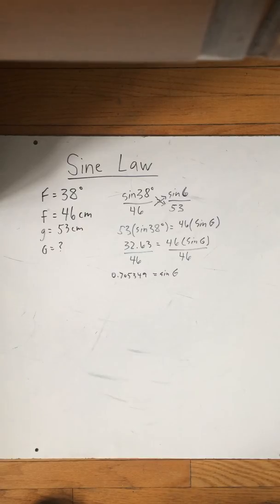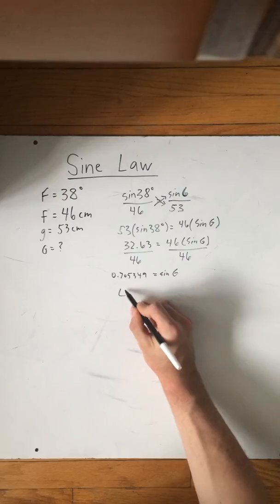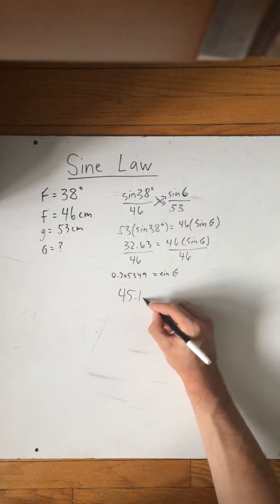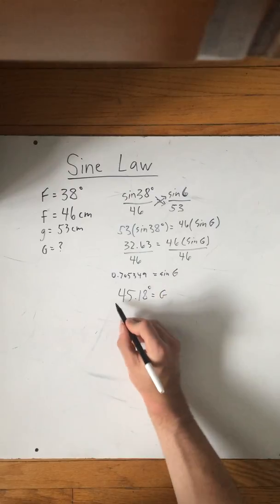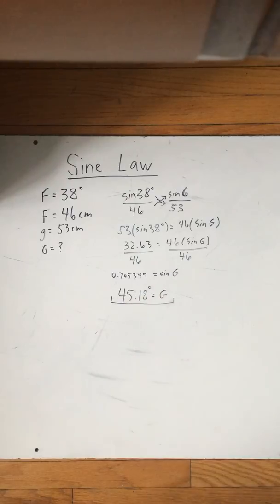And finally, when we plug it in to sine to the power of negative one, sine inverse 0.705349, you will get 45.18 equals G. So that would be in degrees and that is sine law.